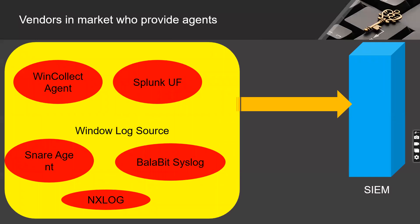There are different agents provided by different vendors in the market: WinCollect agent provided by IBM, Splunk Universal Forwarder provided by Splunk, Snare agent provided by Prophecy, Balabit syslog, and NXLog. I won't recommend one over another, but in the past I have worked on Balabit syslog and Snare agent, and I have good experience with Snare agents.